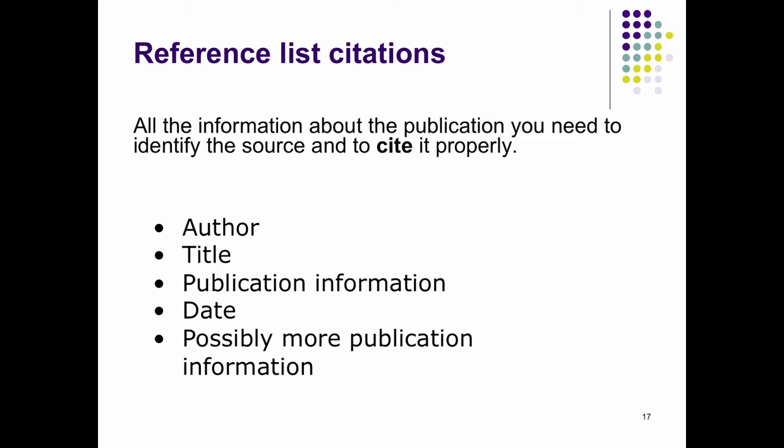Reference list citations should include all the information about the publication needed to identify it: author, title, publication information, date, and possibly other publication details. Every citation may have some missing pieces, but you should at least look for each of these items. The trickiest and least consistent part between different types of sources is the publication information. The format changes depending on whether it's a journal article versus a book, versus a book chapter, versus a YouTube video. A common mistake is including publisher information in a journal article citation — you don't need that for a journal, but you do for a book.